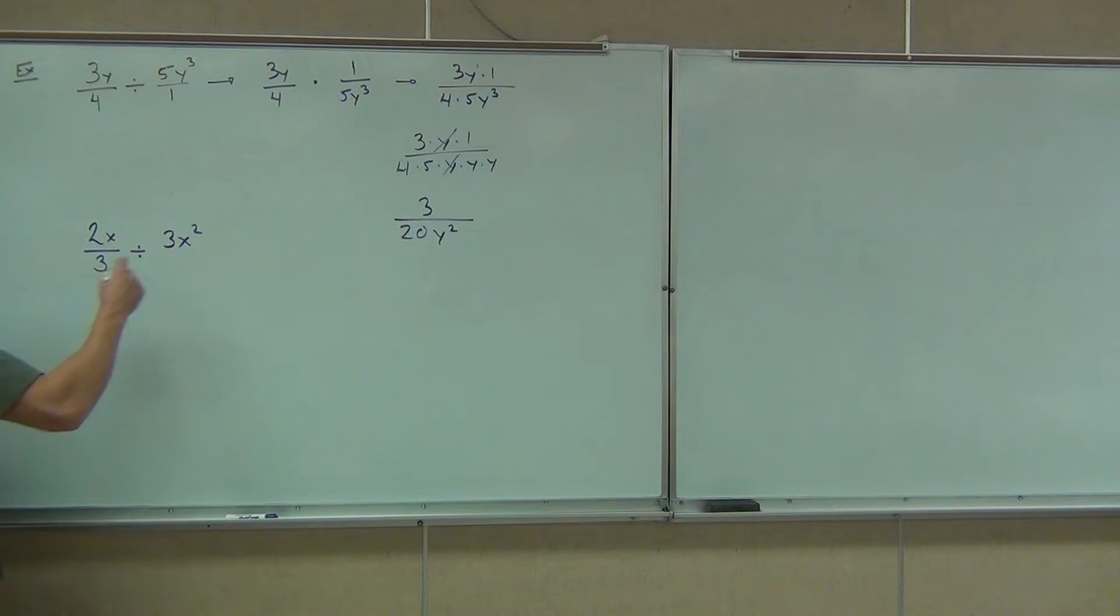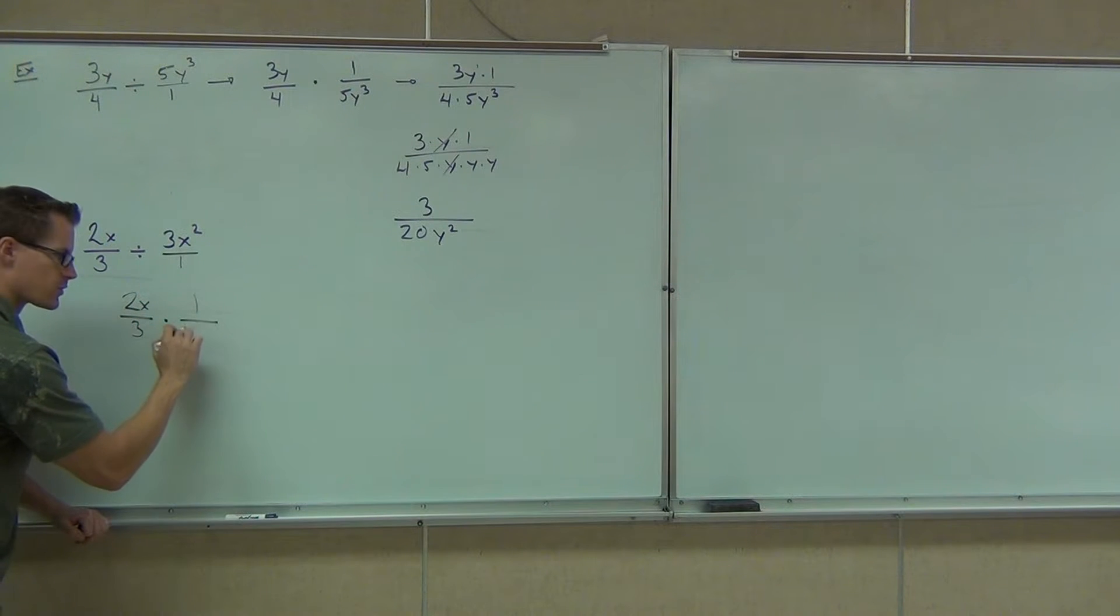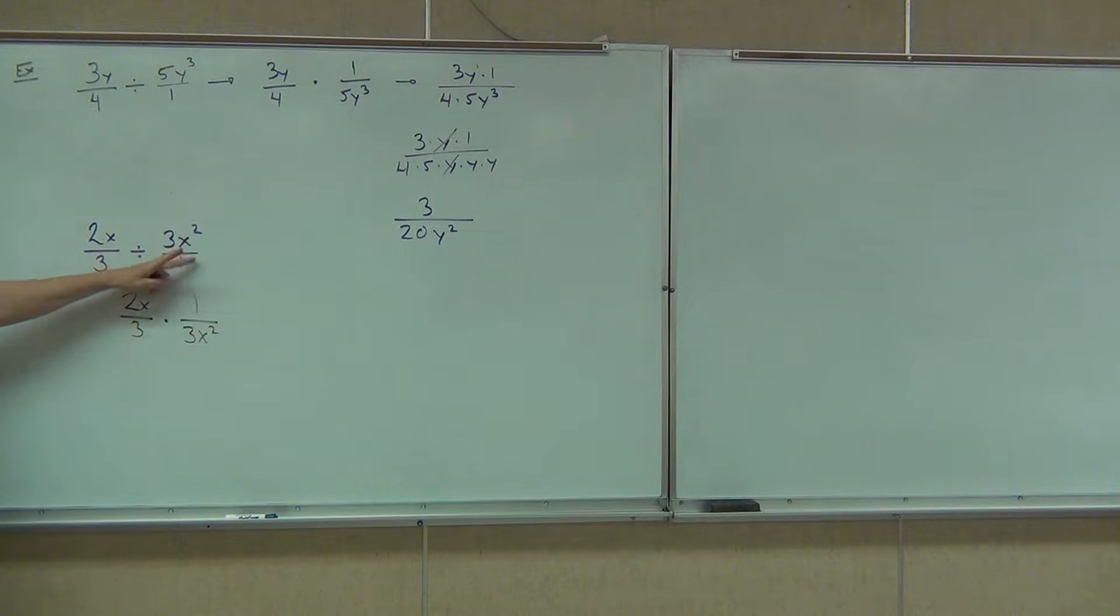So let's handle this problem. We're going to make this into a fraction first. Just put that thing over 1. Of course, division means we've got to multiply by the reciprocal of the second fraction. So instead of 2x over 3 divided by 3x squared, we're going to have 2x over 3. That one doesn't change, but now we're going to multiply it by 1 over 3x squared.